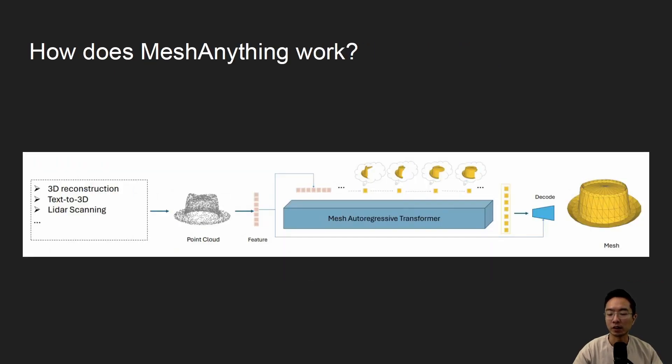So how does Mesh Anything work? So the idea is you want to use some method here, like 3D reconstruction, text to 3D, LiDAR scanning, and so on, to obtain a point cloud. So one way is to get the point cloud. Again, some other ways is if you had the mesh, they'll do some things to get the point cloud from that and then do some things with it. But here, the main pipeline is to get it from a point cloud, and you can see that you'll get some feature and then pass it into this mesh autoregressive transformer, pass it through a decoder, and then you're going to output the mesh.